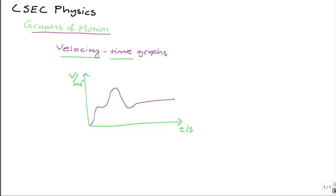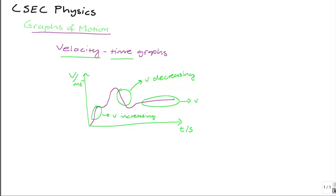If the line slopes upwards in one section, as seen here, then it indicates that the velocity of the object is increasing. Similarly, if the line is sloping downwards for a portion of the graph, then during that period of time the graph is indicating that the velocity is decreasing. And if a portion of the graph is horizontal, then it indicates that velocity is constant.